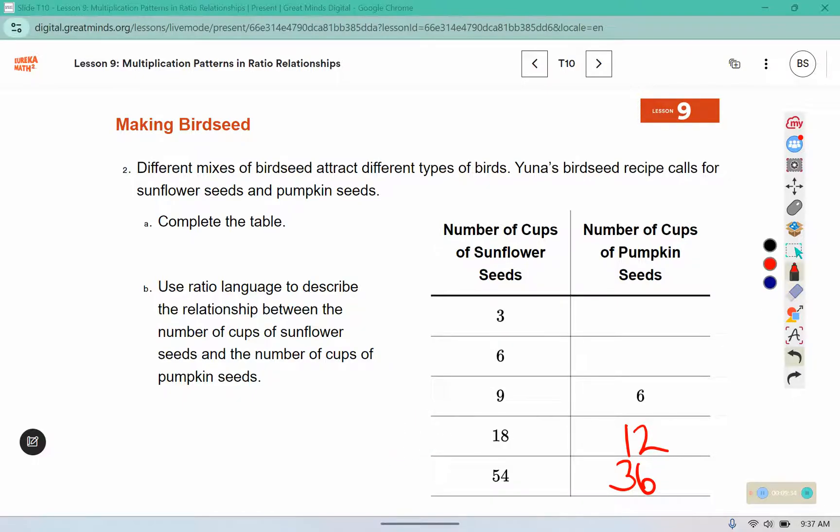If I split 18 into 3 parts, that's also the same as multiplying by 1 third, if we're looking for a multiplication pattern. 12 divided by 3 is 4, or 12 times 1 third is 4.